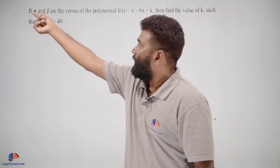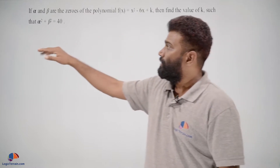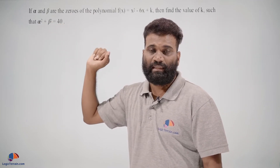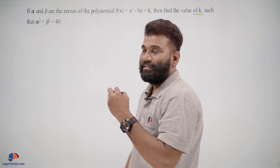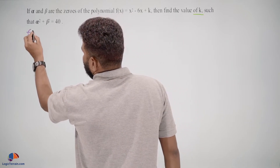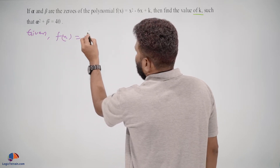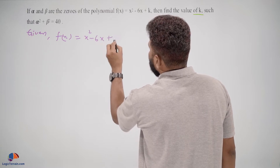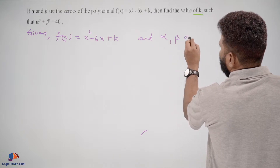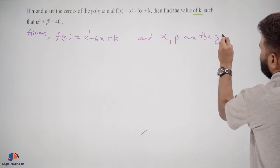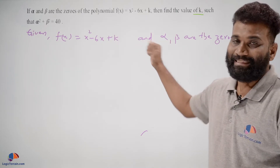It is given that alpha and beta are zeros of this polynomial f(x), and also given that alpha² + beta² = 40. By using these two conditions we have to find the value of k. The polynomial is f(x) = x² - 6x + k, and alpha, beta are the zeros of f(x).